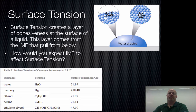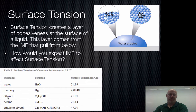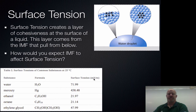So we want to take a look at how intermolecular forces affect surface tension. We go to some data. We have water, mercury, ethanol, octane, and ethylene glycol — some comparative formulas. Water has a surface tension measured in millinewtons per meter, and we end up getting 71.99. Now we go to mercury, which is 458.4, so it's a gigantic surface tension.